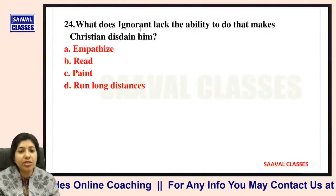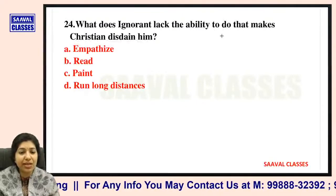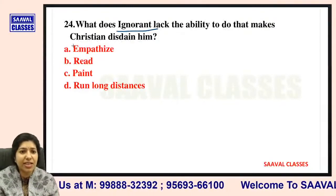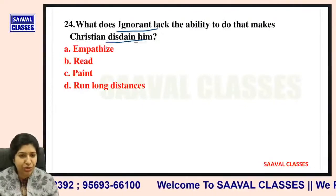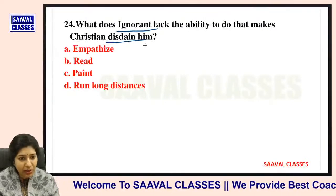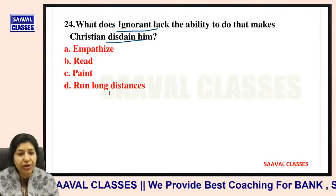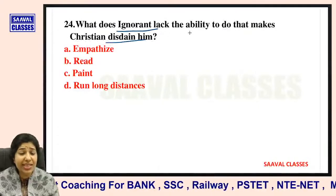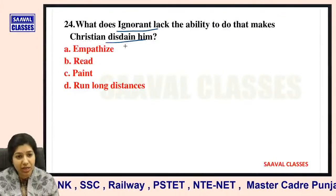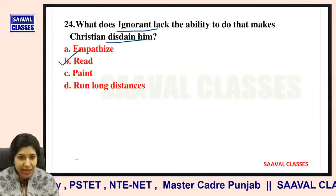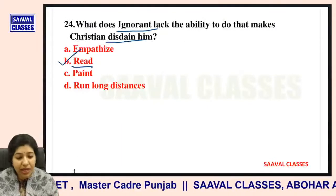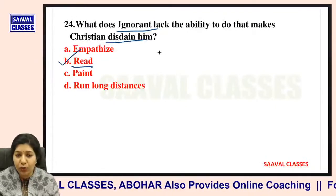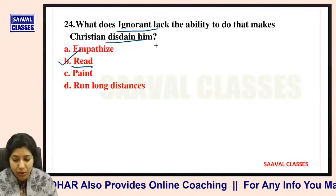Question number twenty-four: What does Ignorant lack the ability to do, that makes Christian disdain him? He cannot empathize, he cannot read, he cannot paint, or he cannot run long distances? It is because Ignorant cannot read — lacking the ability to read causes him to miss many markers on the road and he cannot properly undertake the journey.